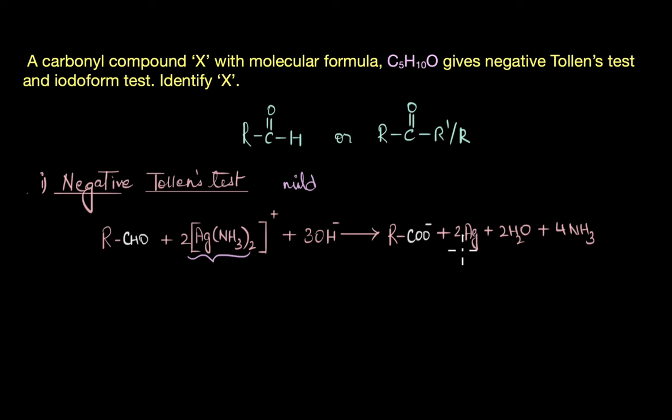This formation of the silver mirror on the test tube is what basically indicates a positive test or positive result. Now the interesting thing is we can use Tollens test to distinguish between aldehydes and ketones, because only aldehydes give positive Tollens test. That is, only aldehydes are oxidized to carboxylate ion, forming a silver mirror. Since the carbonyl compound X gives a negative Tollens test, we can safely assume that it is not an aldehyde but a ketone.